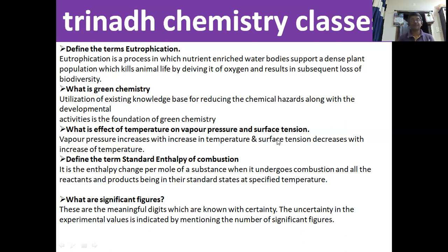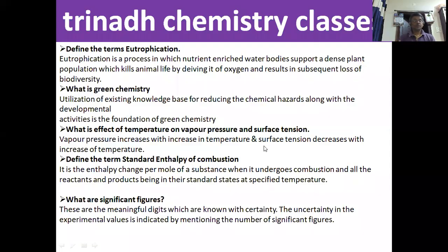Next: state function and path function. Properties which depend only on the initial and final states are called state functions; those which depend on the path are called path functions. Examples of state functions are internal energy, enthalpy, Gibbs free energy, and entropy. Work and heat are examples of path functions.